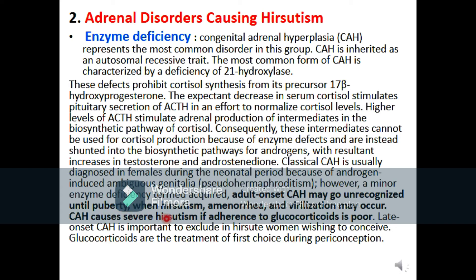There are two types of congenital adrenal hyperplasia: early onset and late onset. Late onset, or adult onset, is diagnosed or becomes apparent during puberty, where hirsutism, amenorrhea, and virilization may occur. It causes severe hirsutism if the patient does not receive glucocorticoid treatment.